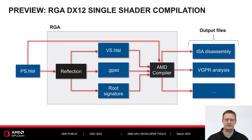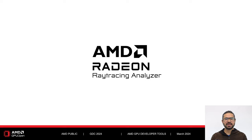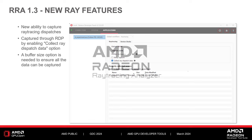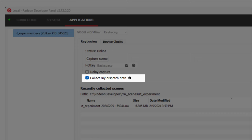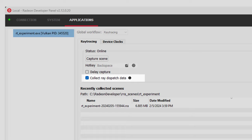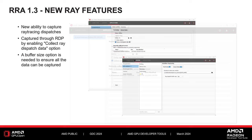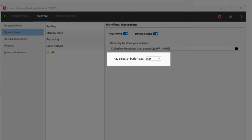Now I'd like to hand off to Amit Malay to continue our look at additional parts of the tool suite. Thanks, Chris. Let's talk about the Radeon Ray Tracing Analyzer, or RRA. Last year in September, we updated RRA to version 1.3, which introduced new dispatch features. To activate this feature, prior to capturing a scene you can check the Collect Ray Dispatch Data option in RDP. In some instances there may be too many rays to capture — changing the resolution or window size of your game may be a quick solution, or you can try increasing the Ray Dispatch buffer size through the dropdown in RDP.